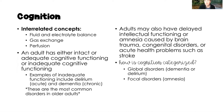As an adult, we either have intact or inadequate cognitive function. Some examples of inadequate functioning are delirium, which is an acute disorder, or dementia, which is a chronic disorder. These are the two most common cognition disorders in older adults, and we're going to talk a little more about the difference between them on the next slide.